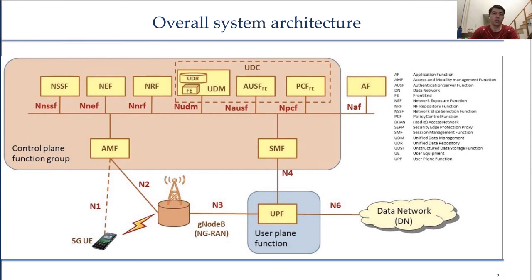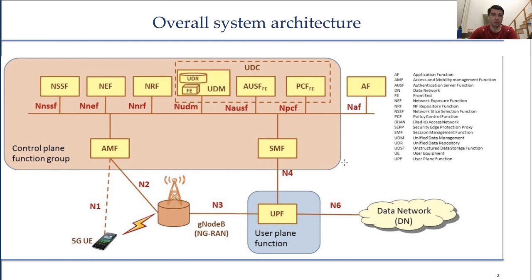The 5G core network builds upon the EPC with three new areas of enhancement compared to EPC. The first is a service-based architecture. The second is support of network slicing. And the third is a control plane and user plane split.